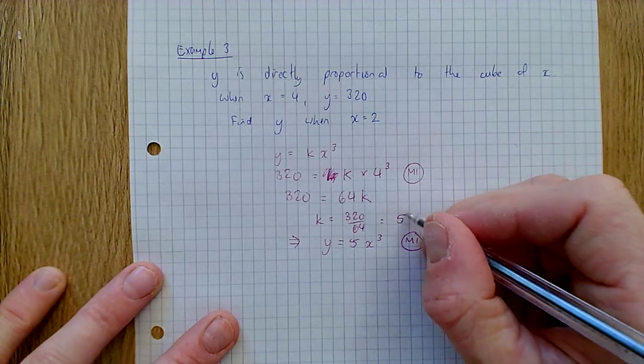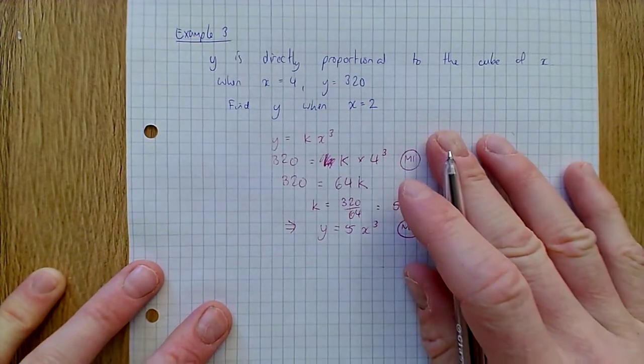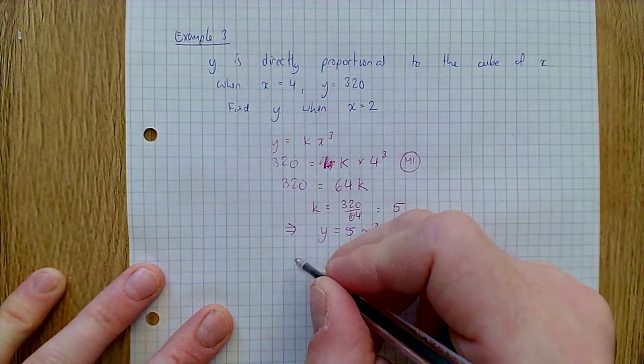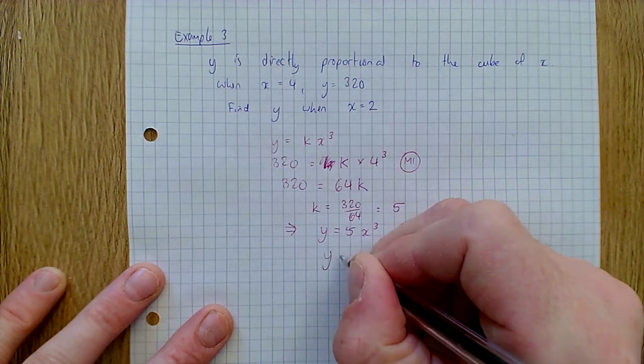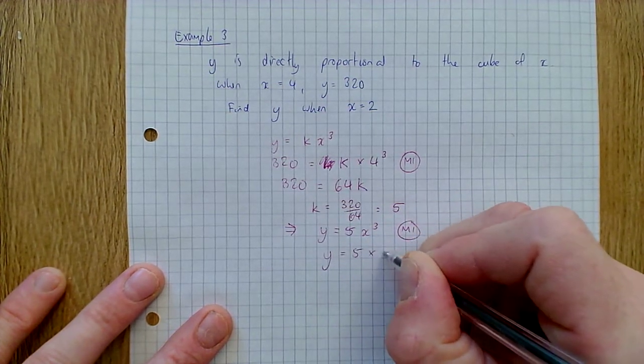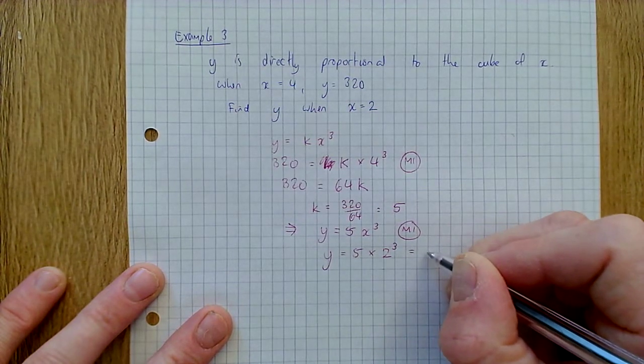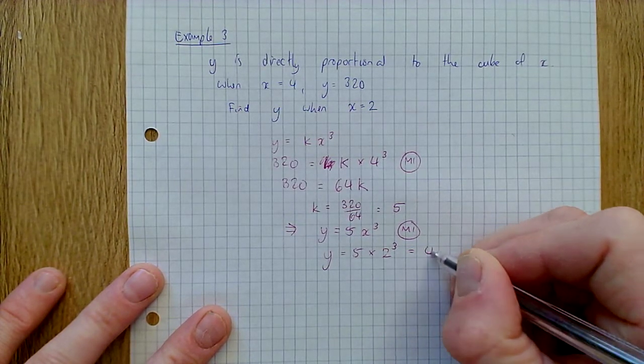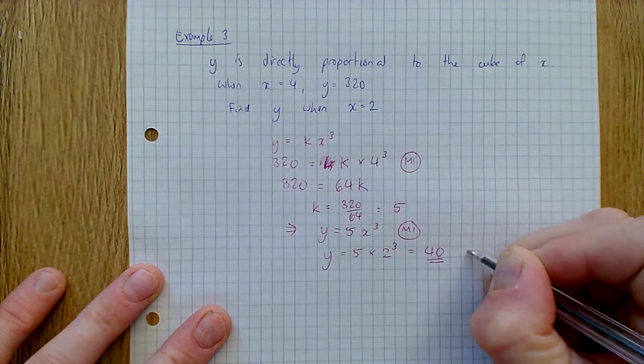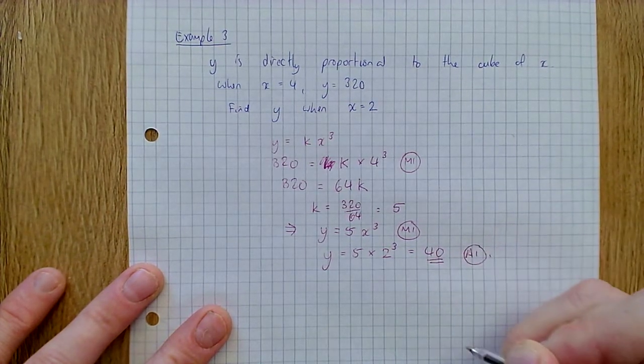And then the final step: let's find y when x equals two. So y equals five times two cubed, which is five times eight, which is 40. And there's your final mark.